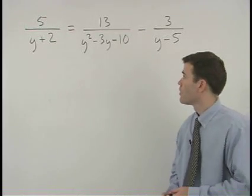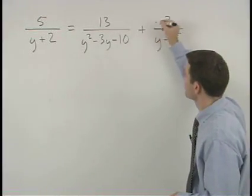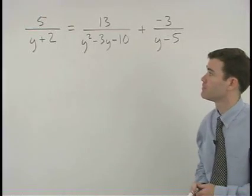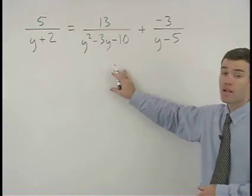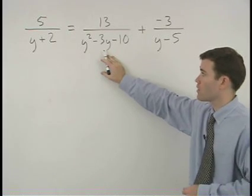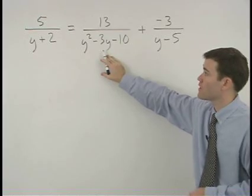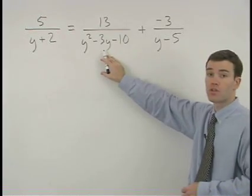Start this problem by changing the minus three to plus a negative three. To find the common denominator, notice that we must factor y squared minus three y minus ten as y minus five times y plus two.